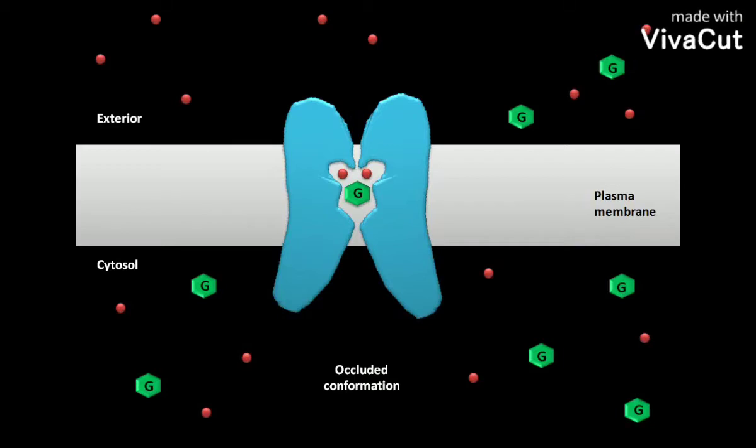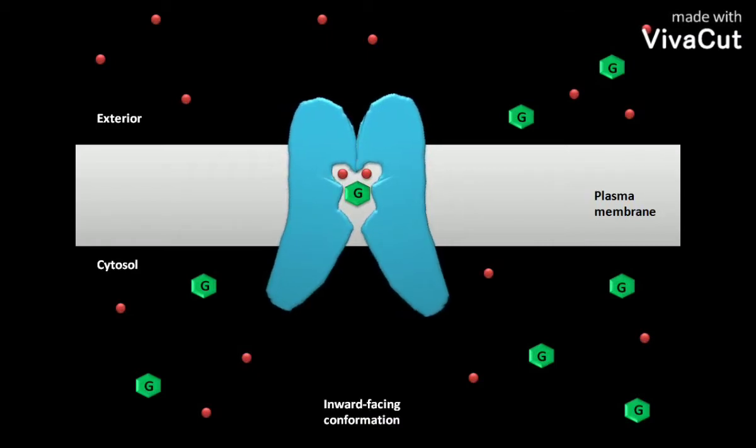In the next step, the symporter protein attains an inward facing conformation. As a result, the bound two Na plus and glucose dissociate from the symporter and reach the cytosol of the cell.